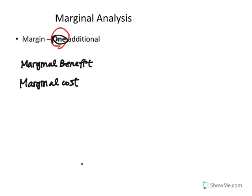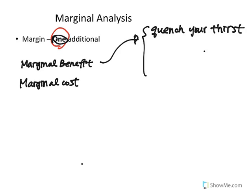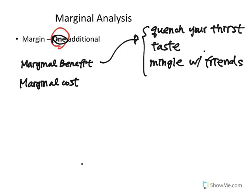So let's first think about the marginal benefit of drinking a can of beer. What are the benefits of drinking a can of beer? It will quench your thirst. And maybe the beer tastes good to you, so you're drinking the beer for its taste. And maybe everyone else at the party is also drinking beer, so you feel that you mingle better with your friends if you also drink a can of beer. So you like to mingle with your friends, and the beer helps you with that.